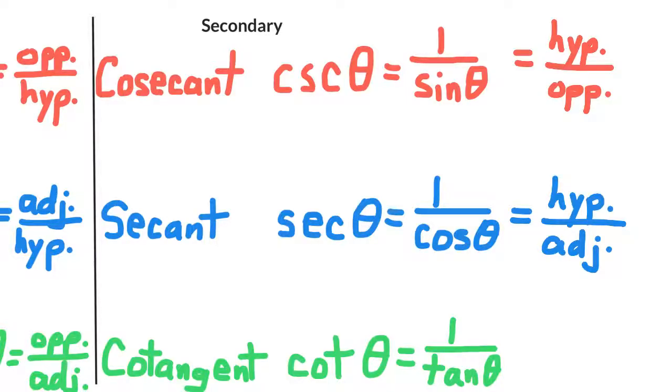And cotangent is the reciprocal of tangent, so the cotangent is adjacent over opposite.